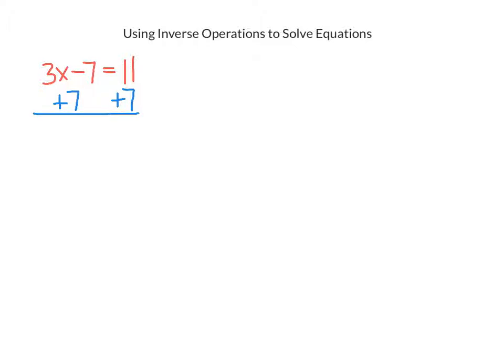So 3x minus 7 plus 7. Well, you can see that the minus 7 plus 7 cancels each other out, and we have 3x equals 18. There's only one operation left to undo. That's the multiplication. And we undo multiply by 3 by dividing both sides by 3.